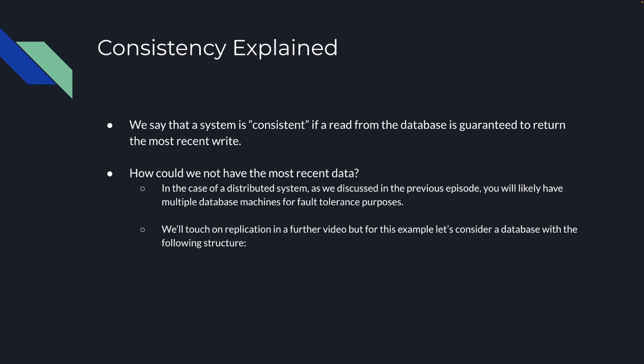What is consistency? We can say that a system is consistent if a read from the database is guaranteed to return the most recent write. You might ask how could we not have the most recent data? Well, in the case of a distributed system, as we discussed in the previous episode, you're likely going to have multiple database machines for fault tolerance purposes.